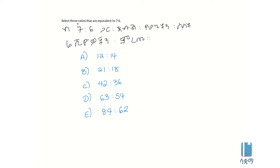Select three ratios that are equivalent to 7 to 6. Select three ratios that are equivalent to 7 to 6, so that they are equivalent to 7 to 6.